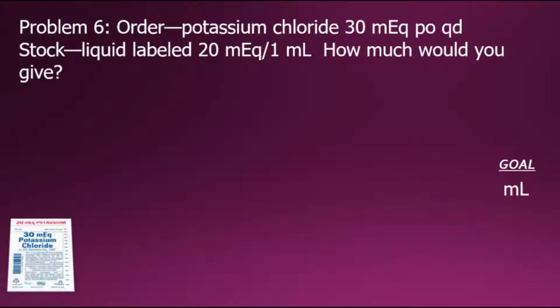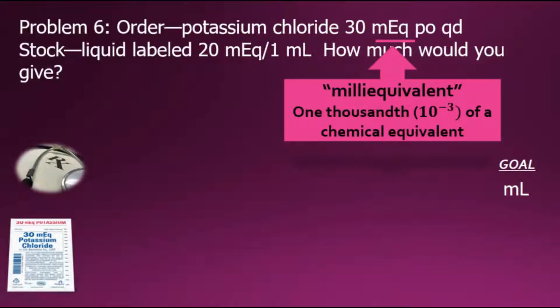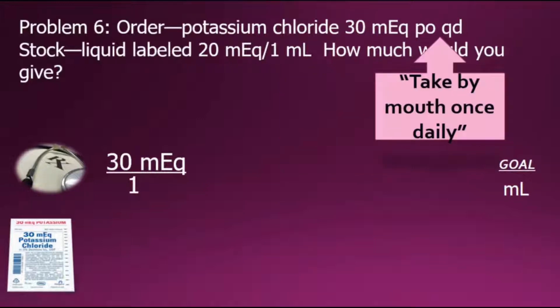To answer the question, we are converting the current order in milliequivalent into milliliters. To start the solution, we will begin with the doctor's order, which we see is 30 milliequivalent. Milliequivalent stands for 1,000th of a chemical equivalent. We will express this order as a fraction, shown here, with a denominator of 1 for an equivalent value. The rest of the order has PO QD, PO standing for take by mouth, and QD is daily.